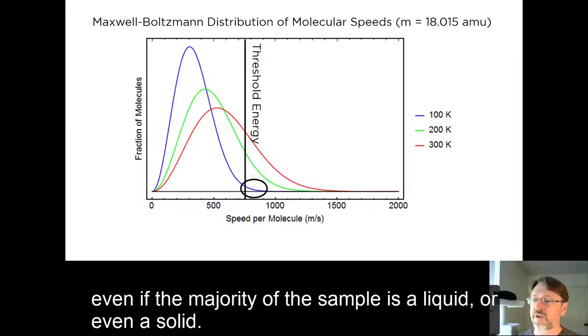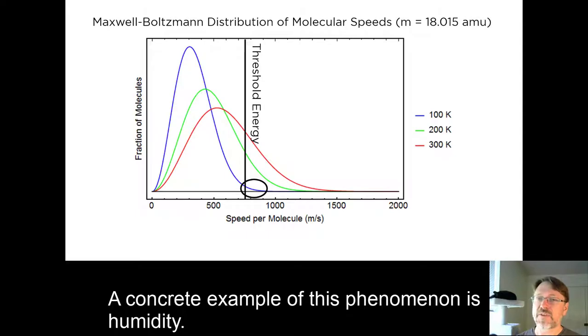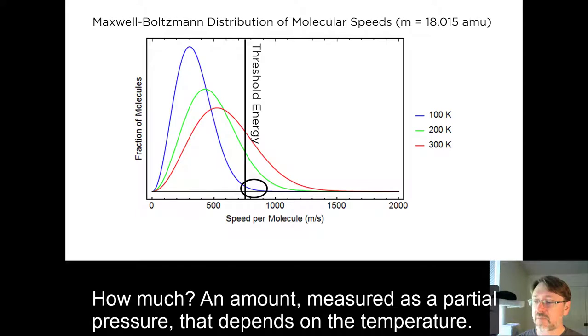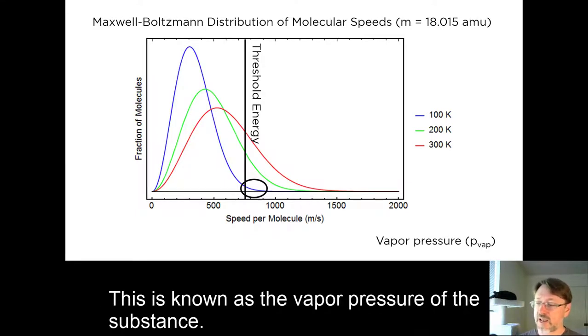A concrete example of this phenomenon is humidity. Water boils at 100°C, but at any temperature below that, there will still be some water vapor in the air. How much? An amount measured as a partial pressure that depends on the temperature. This is known as the vapor pressure of the substance.